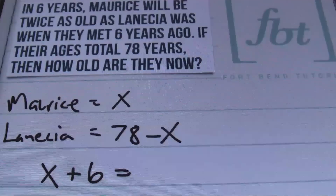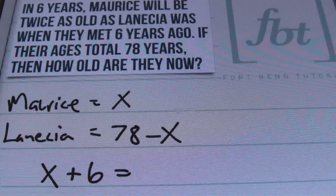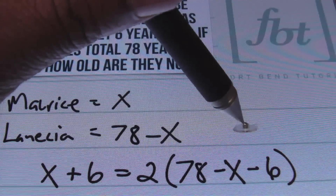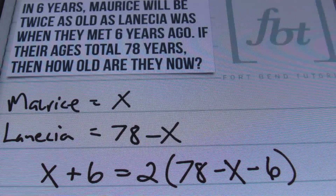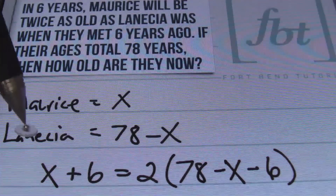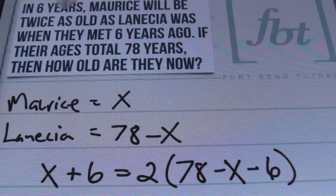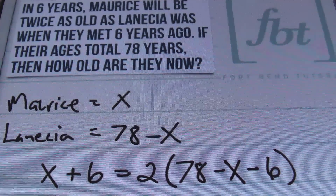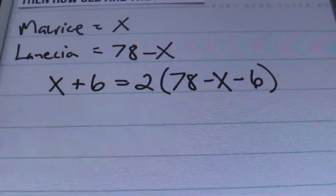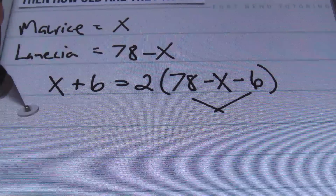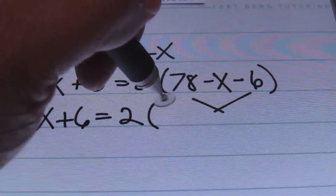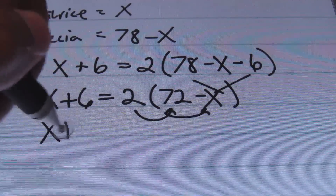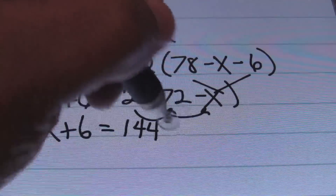He'll be twice as old as LaNicia was when they met six years ago. So we're subtracting six from LaNicia's age because the equation says 'when they met six years ago.' This is LaNicia's age six years ago, and this is Maurice's age six years from now. So this is going to be my equation: x plus six equals two times (seventy-eight minus x minus six), which equals two times seventy-two minus x. Then I'll distribute — x plus six equals one hundred forty-four minus two x.